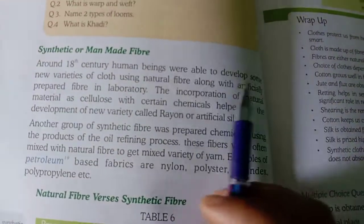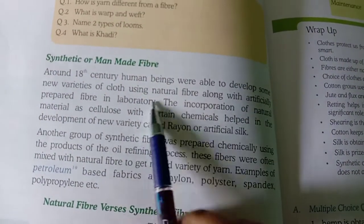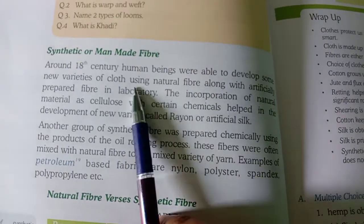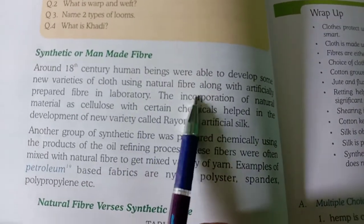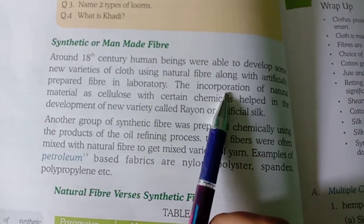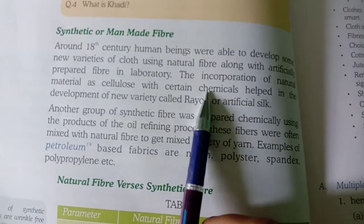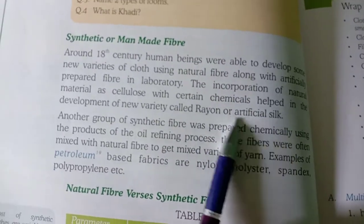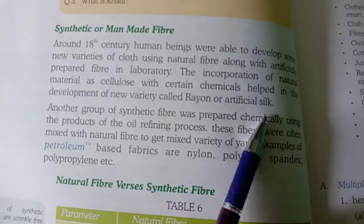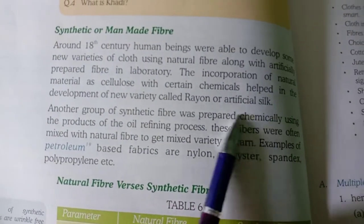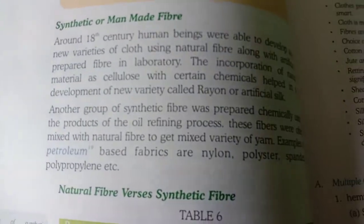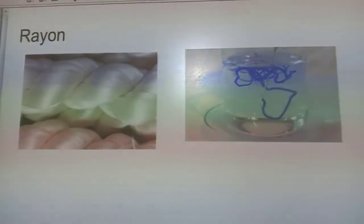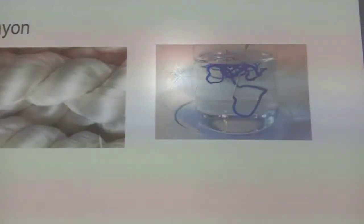And at last, we come to synthetic or man-made fiber. Synthetic or man-made fiber is the fiber which is made by mixing chemicals. Like rayon, or artificial silk — these are made by using chemicals in the laboratory.